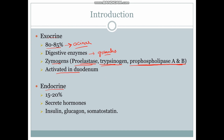The endocrine portion constitutes almost 15 to 20 percent of the pancreas and is mainly composed of the islets of Langerhans. The islets of Langerhans secrete hormones called insulin and glucagon. Insulin is the hormone that decreases blood sugar level, whereas glucagon is the hormone that increases blood sugar level.